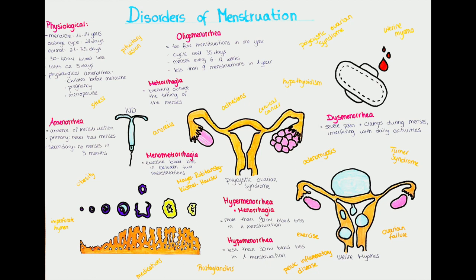Causes for secondary amenorrhea include endocrine disorders such as polycystic ovarian syndrome, hypothyroidism, hyperprolactinemia, and ovarian failure, as well as neoplasms of the hypothalamus or pituitary gland. For diagnosis of amenorrhea, 4 milliliters of blood serum are taken, ideally in the morning between 8 and 10 a.m. The blood is used to measure hormone levels including luteinizing hormone, follicle-stimulating hormone, estrogen, progesterone, testosterone, prolactin, and thyroid hormones TSH, FT3, and FT4.